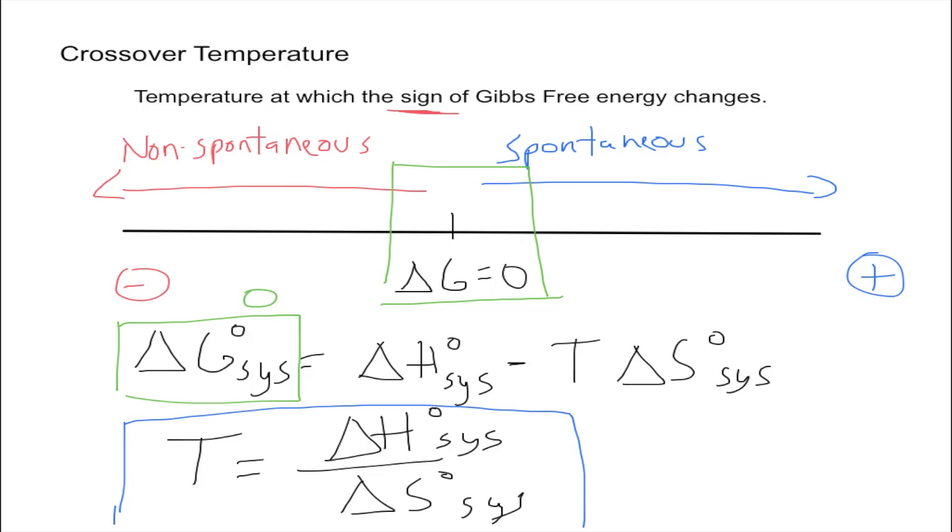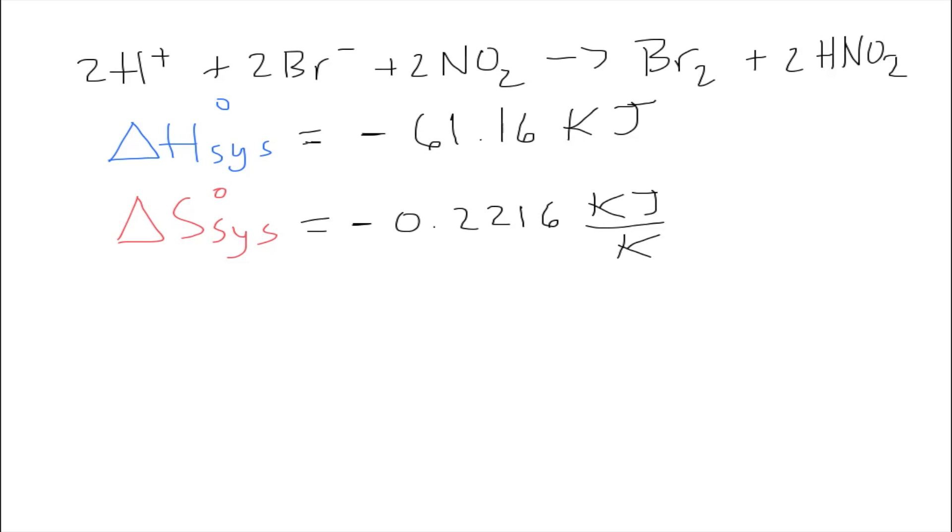Now let's solve a problem. I'm going to use numbers from a problem I used before. I solved this when doing the video on how to obtain the Gibbs free energy using enthalpy and entropy values. We obtained these two numbers for delta H and delta S. The question is over what temperature range is this reaction spontaneous? Whenever you read something like that, you always have to think of crossover temperature because that's what's going to tell you where that boundary is.